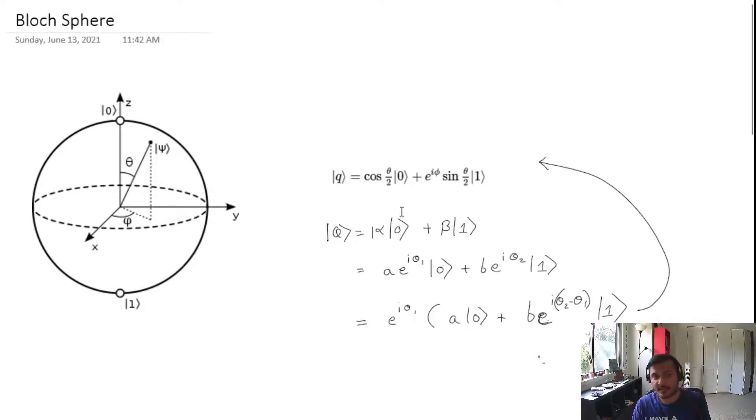When I put theta to be pi, I get sine pi over two here which becomes one, and then this is just a phase which doesn't matter. Any value is fine. State one is the one that is pointing downwards. So this is a representation of a qubit to give you a physical picture of what is actually happening.